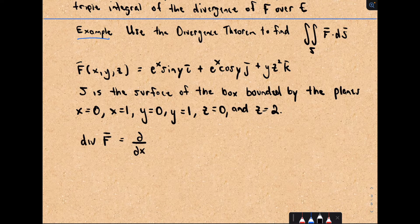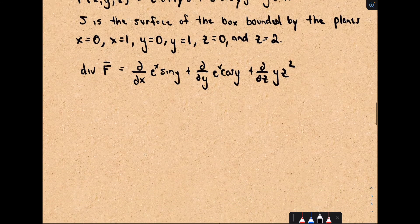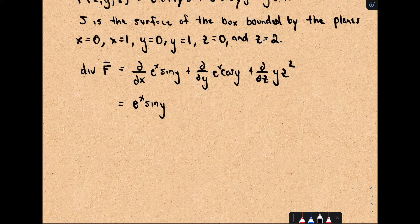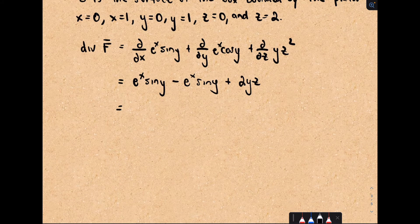The divergence is going to be our integrand. We take the partial with respect to x of e^x sin(y), plus the partial with respect to y of e^x cos(y), plus the partial with respect to z of yz². The partial of e^x sin(y) with respect to x is e^x sin(y). The partial of e^x cos(y) with respect to y is −e^x sin(y). And the partial of yz² with respect to z is 2yz. So the first two terms cancel and we're left with 2yz.